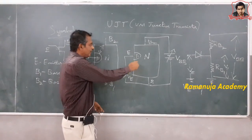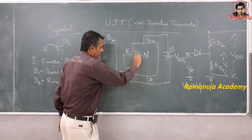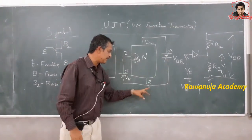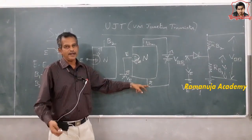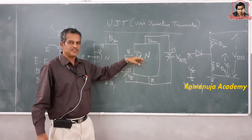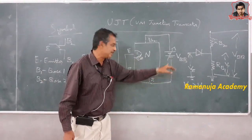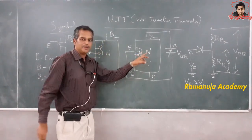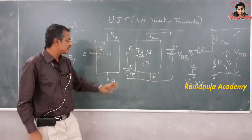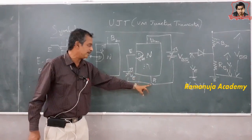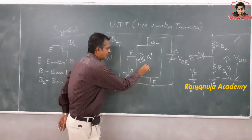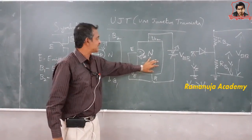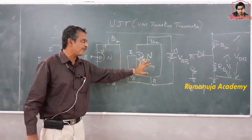So when VE is greater than V1, this diode conducts and the junction becomes forward biased. The holes that are liberated will get attracted by the negative potential given to B1. The holes from the P region get attracted by the negative potential at B1. Since this is an N-type semiconductor, the majority carriers are electrons. When the holes cross this region to move towards that potential, the conduction in this region is going to increase.